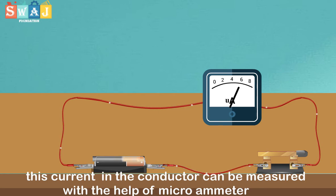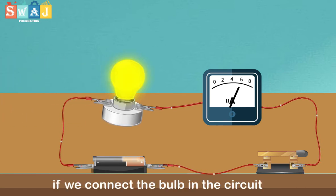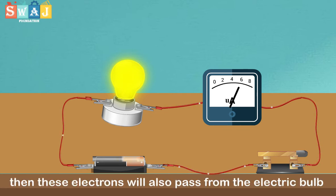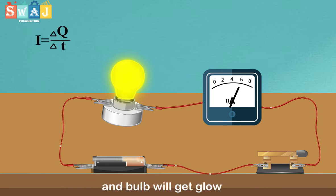This current in the conductor can be measured with the help of ammeter. If we connect the bulb in the circuit, then these electrons will also pass from the electric bulb and bulb will glow,